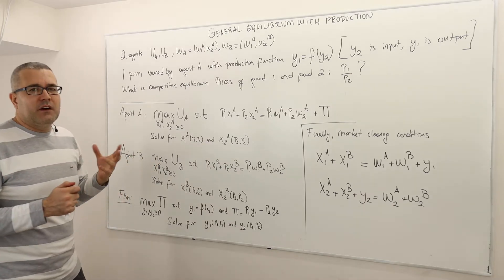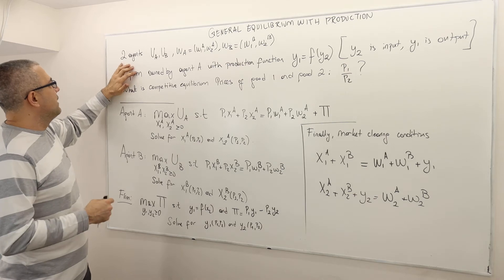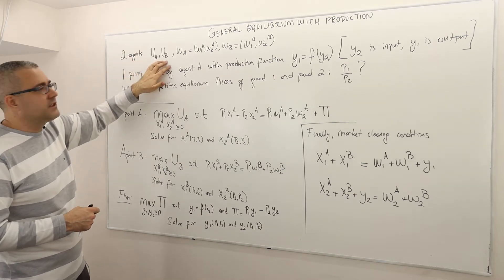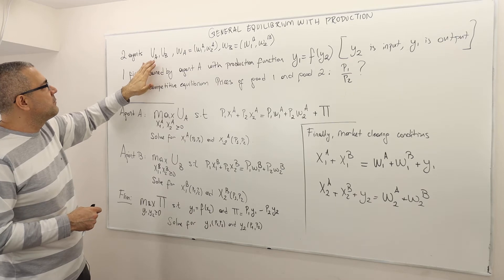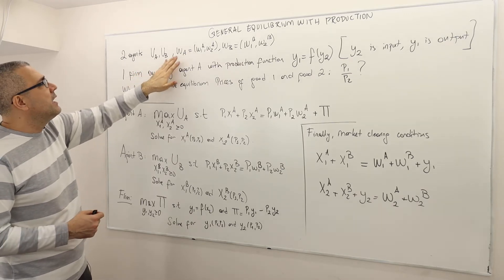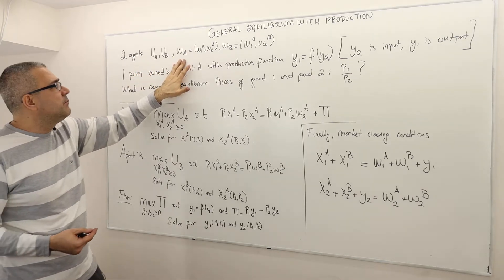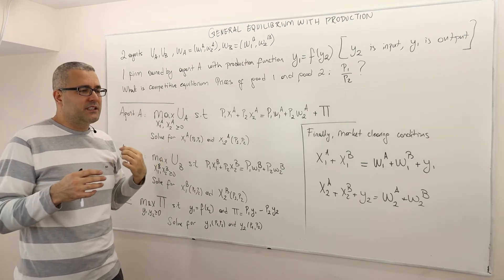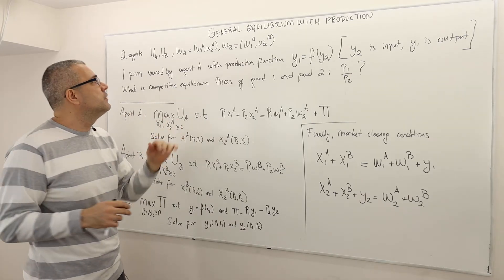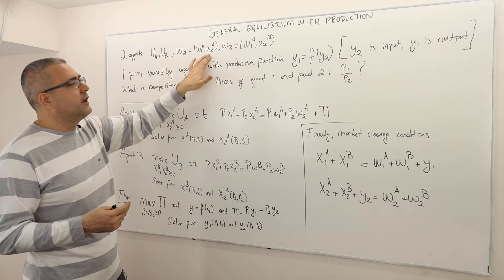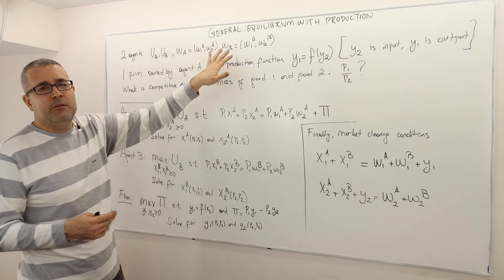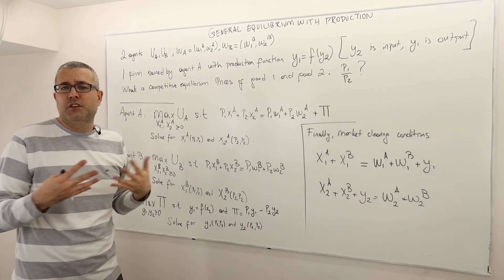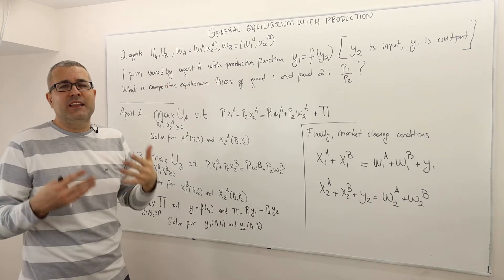So what is the environment? There are two agents with preferences or utility functions represented by U-A and U-B. There are two goods — good one and good two — and for simplicity, you can extend this analysis to many goods. Each agent, A and B, brings some good one and some good two into this market. So these are their initial endowments.